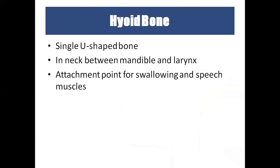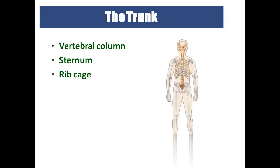The hyoid bone is the only bone in the front of the neck region. It is U-shaped, present between the larynx and the mandible, and serves as the point of attachment for swallowing and speech. When a person is hanged to death, this hyoid bone is the one that breaks.